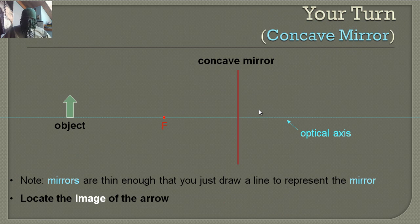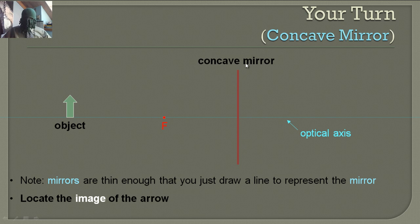Note that mirrors are thin enough that you just draw a straight line to represent the mirror. Even though this is concave, you just draw a straight line as long as you remember the rules for concave mirrors. It would be helpful to label it concave too.